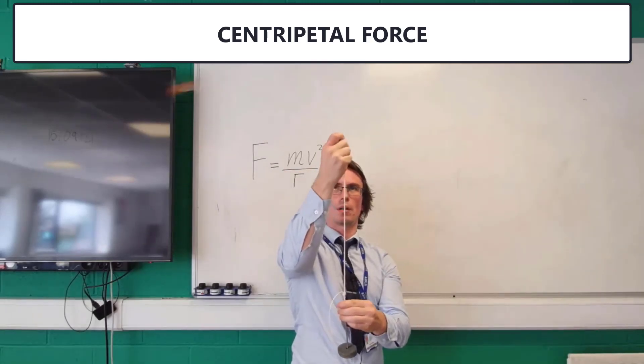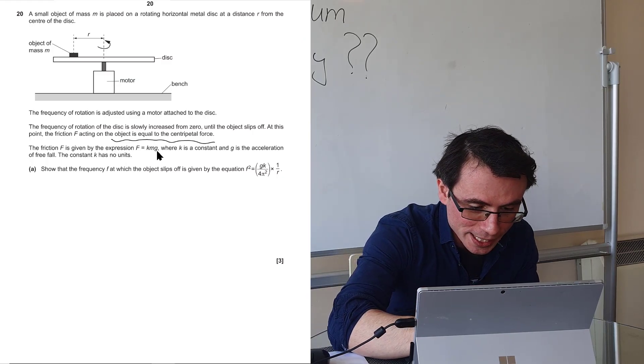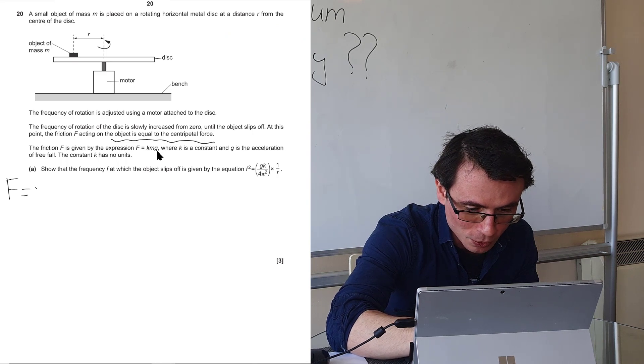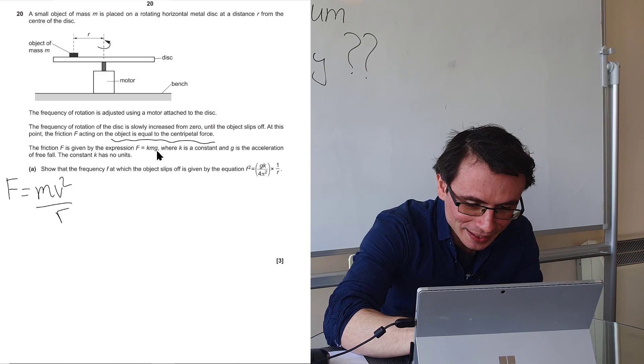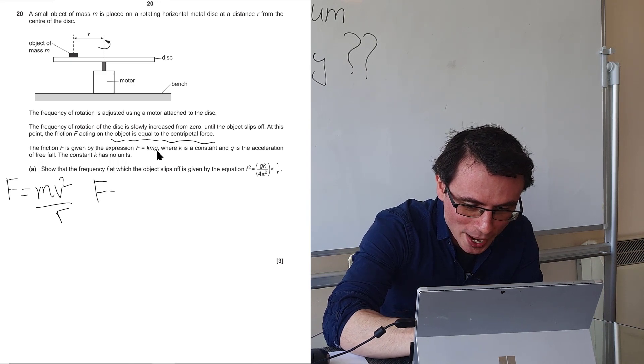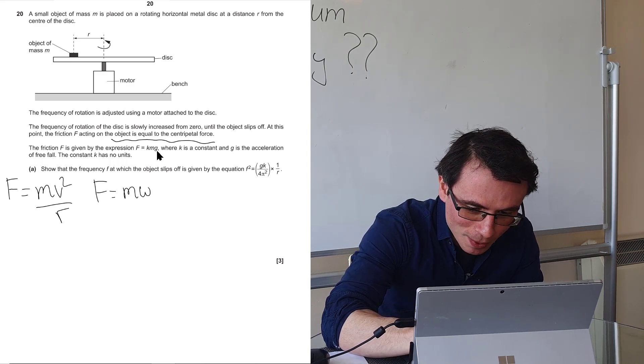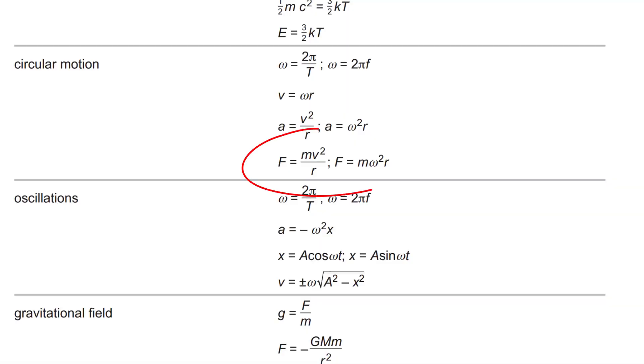There are two formulas that we know for the centripetal force. One is that the centripetal force is equal to mv squared over r. Another one is that the force is equal to m omega squared times r. Both of these formulas are given in our equation sheet.